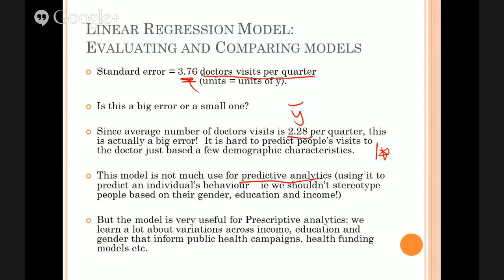That doesn't mean it's not useful because there's also the prescriptive analytics component. Prescriptive analytics is about understanding the dynamics of relationships between x and y. That's what we've used the model for in previous videos when we interpreted the effect of things like income, education, and gender. We've learned there's a big difference between men and women, very little difference between the rich and the poor when it comes to doctor's visits. If we want to target our public health campaigns, we maybe need to target men to get them to go to the doctor more. That's all still valid conclusions to draw on average from this model. It's just you can't use it to predict a particular individual's behavior with any great certainty.